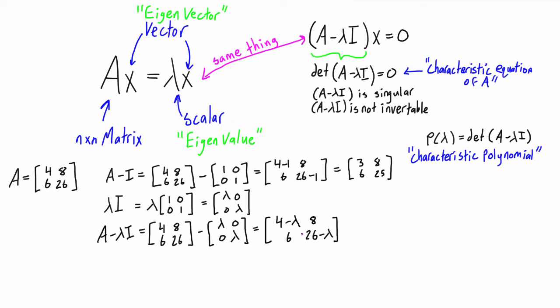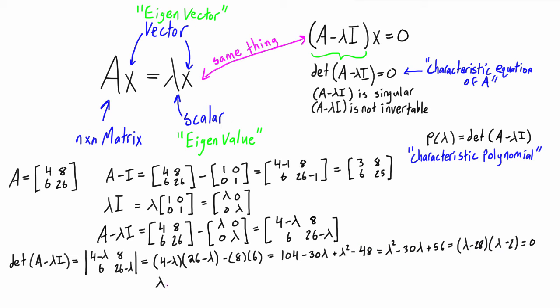So if we just apply that to this example down here, and we take the determinant of A minus lambda I, we find these two roots, and each of them are one of the two eigenvalues. So our first eigenvalue is 28, and our second eigenvalue is 2.